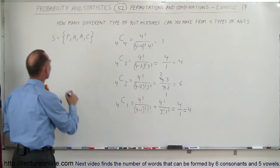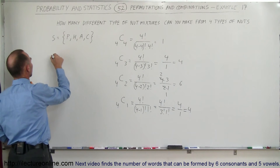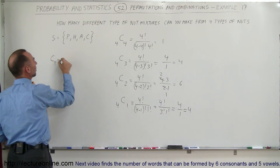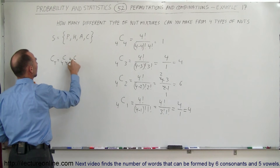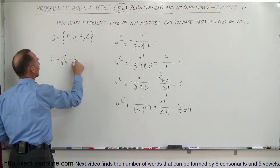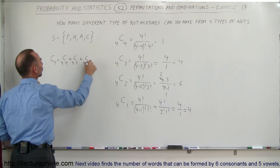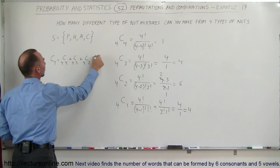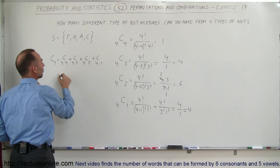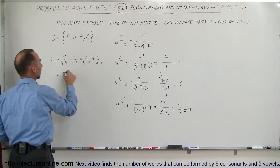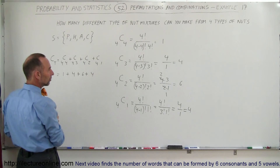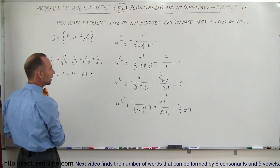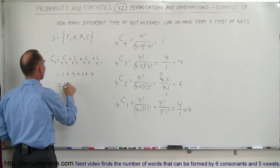The total number of combinations is C(4,4) plus C(4,3) plus C(4,2) plus C(4,1), which equals one plus four plus six plus four, giving us fifteen total combinations.